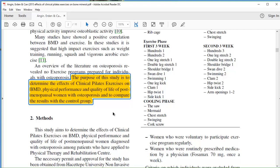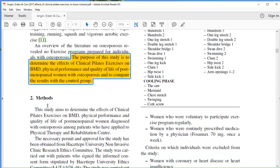That purpose statement is going to help you understand why they chose the design that they chose. So the purpose here is to determine the effects of clinical Pilates exercises on bone mineral density, physical performance, and quality of life of postmenopausal women with osteoporosis, and to compare the results with the control group. So right here this tells us that they're looking to see if there is any effect of Pilates at all. This is a phase 2 clinical trial equivalent. Is there any effect at all because there is a control group?